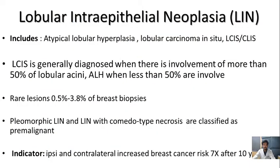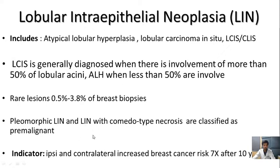The next entity is lobular intraepithelial neoplasia, which includes atypical lobular hyperplasia and lobular carcinoma in situ. Lobular carcinoma in situ is generally diagnosed when there is involvement of more than 50% of the lobular acini, while atypical lobular hyperplasia is diagnosed when involvement is less than 50%. It is a rare lesion observed in 0.5 to 3.8% of breast biopsies. The variants — pleomorphic lobular intraepithelial neoplasia and lobular intraepithelial neoplasia with comedo-type necrosis — are classified as premalignant.